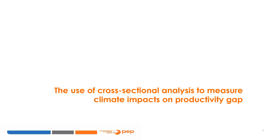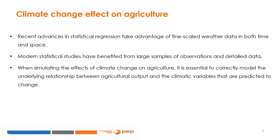Let us begin by looking at the use of cross-sectional analysis to measure climate impacts on the productivity gap. Recent advances in statistical regression take advantage of fine-scaled weather data in both time and space. Modern statistical studies have benefited from large samples of observations and detailed data. When simulating the effects of climate change on agriculture, it is essential to correctly model the underlying relationship between agricultural output and the climatic variables that are predicted to change.